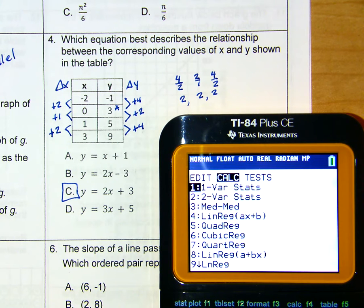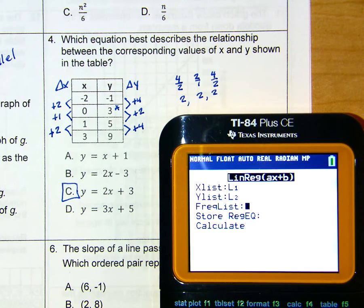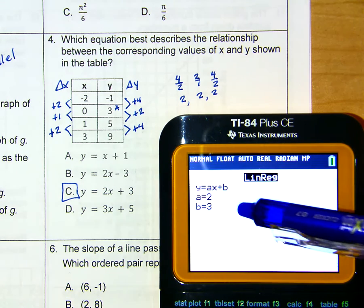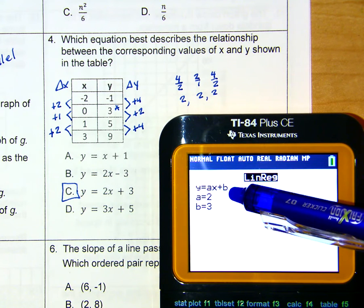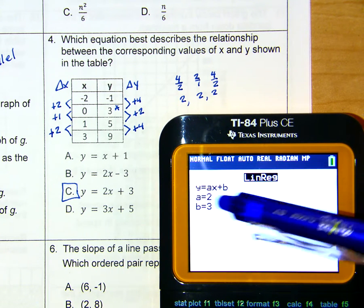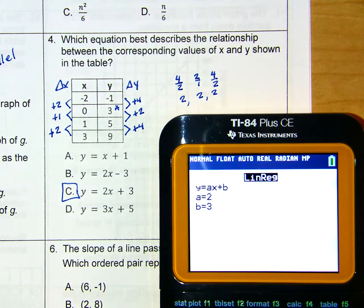Okay, so here we have our data entered into stat. Then I went back to stat, calculate, option number 4, which was our linear regression. And we see that we have a y-intercept of 3 and a slope of 2, which gave us answer choice c. So this is problems 1 through 4 of part 1. In part 2, we will be taking care of problems 5 through 8.